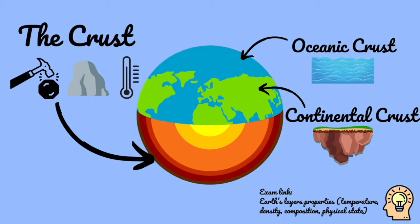We're going to look at these two different types of crust. As a quick reminder, the crust is the outermost layer of the earth — right on the edge — it's the thinnest layer, completely solid rock, and it is our coolest part of the earth. If you need help remembering the properties of the different layers, go back and have a look at the previous video about the structure of the earth. Today we're focusing on how the crust is split into oceanic and continental crust.